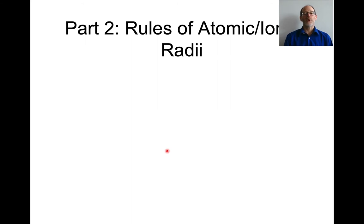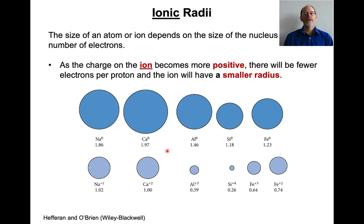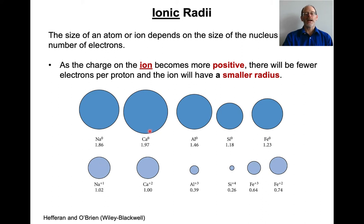Atoms tell us something, but what we need is to talk about ions, because it's ions that pack together to make minerals and earth materials. The size of an atom depends on the nucleus and number of electrons. As an ion becomes more positive, there are fewer electrons per proton, so the protons pull harder on the electrons and the ionic radius gets smaller. For example, calcium is plus two, so its ionic radius is actually a little smaller than sodium's.